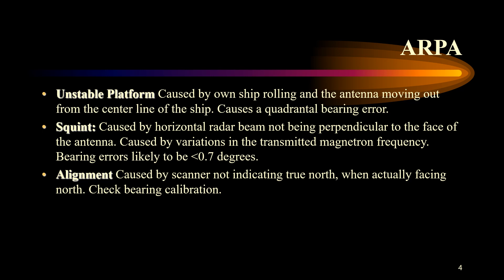Then there is squint, caused by the horizontal radar beam not being perpendicular to the face of the antenna. This is caused by variations in the transmitted magnetron frequency by the scanner. Bearing errors from squint are likely to be less than 0.7 of a degree. This can be checked by performing a bearing calibration check once every four hours.